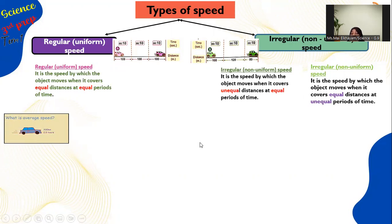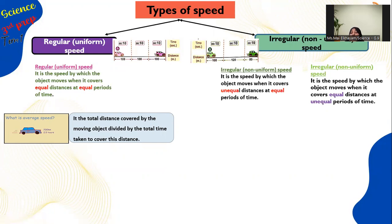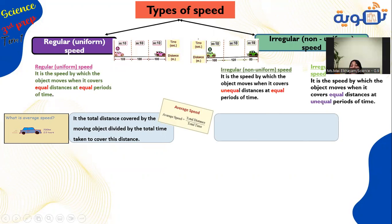Average speed: practically, a moving object cannot maintain regular speed throughout the whole trip due to road and traffic conditions. To calculate the irregular speed precisely, we use average speed, which is total distance divided by total time: d1 + d2 + d3 over t1 + t2 + t3. Average speed also represents the regular speed by which the object moves to cover the same total distance in the same total time.